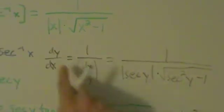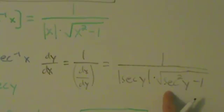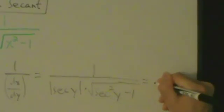Now, secant of y is just x. We want to express the derivative purely in terms of x. So secant y becomes x and secant squared y becomes x squared. Substituting back, dy/dx equals 1 over the absolute value of x times the square root of x squared minus 1. That absolute value comes from the step where we took the square root of secant squared y.